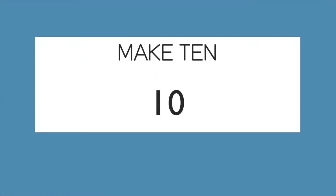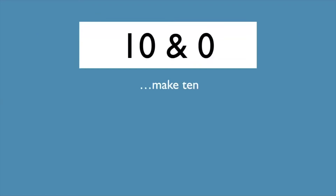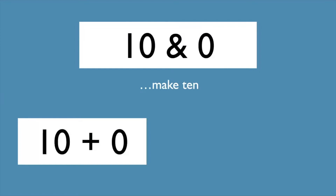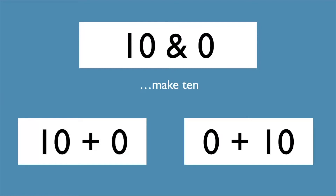Make ten. We know we can add numbers in any order. Let's say the friends of ten and then both ways we can add them. Ten and zero make ten. Add them both ways: ten plus zero, zero plus ten.